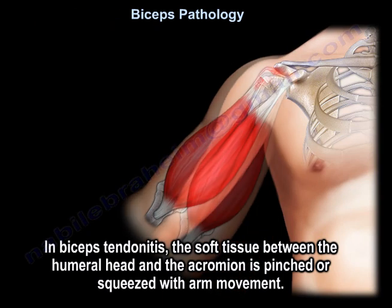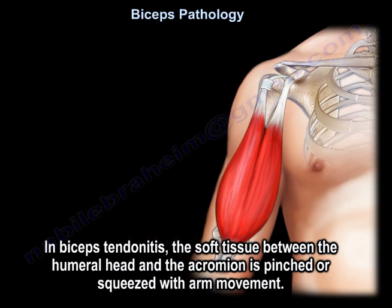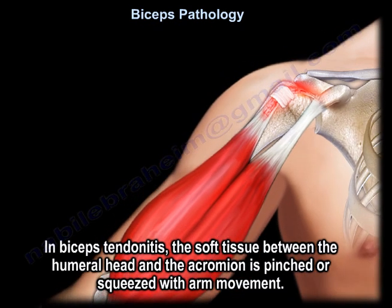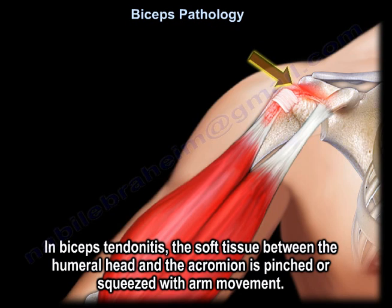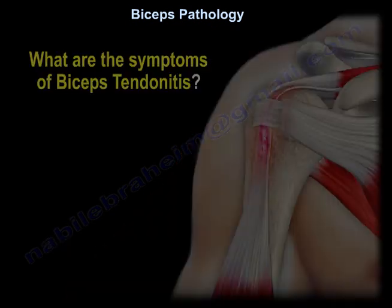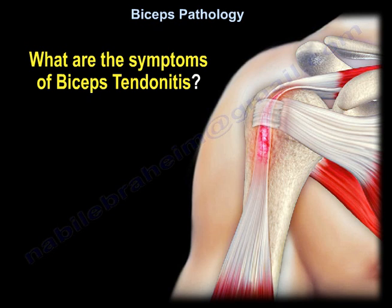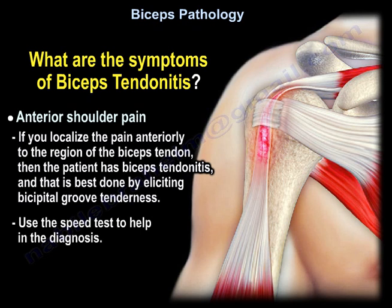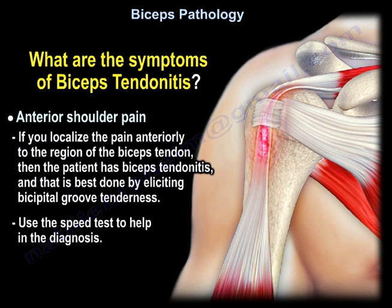In biceps tendonitis, the soft tissue between the humeral head and the acromion is pinched or squeezed with arm movement. Symptoms include anterior shoulder pain. If you localize the pain anteriorly to the region of the biceps tendon, then the patient has biceps tendonitis. That is best done by eliciting bicipital groove tenderness and using the Speed test to help in the diagnosis.